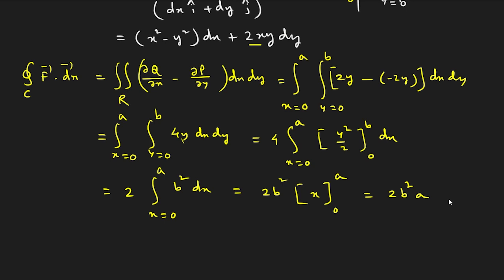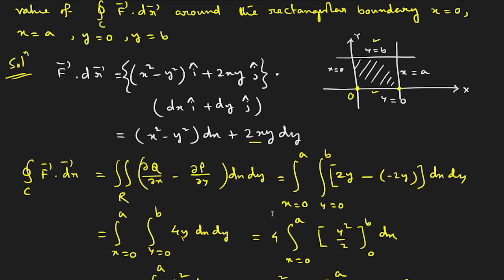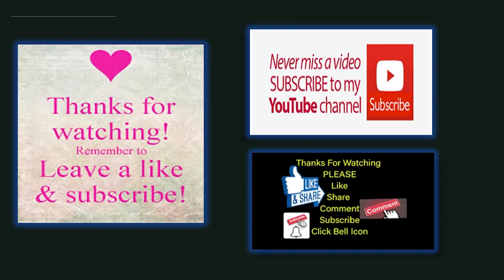The answer is 2aB². In the previous two problems we verified Green's theorem, and in this problem we used it directly to evaluate the integral. The conditions may differ across problems — parabolas, triangles, rectangles — but the approach remains the same. I hope all the examples of Green's theorem are clear. If you like the video, share it with your friends and subscribe. Thank you very much, until the next video.